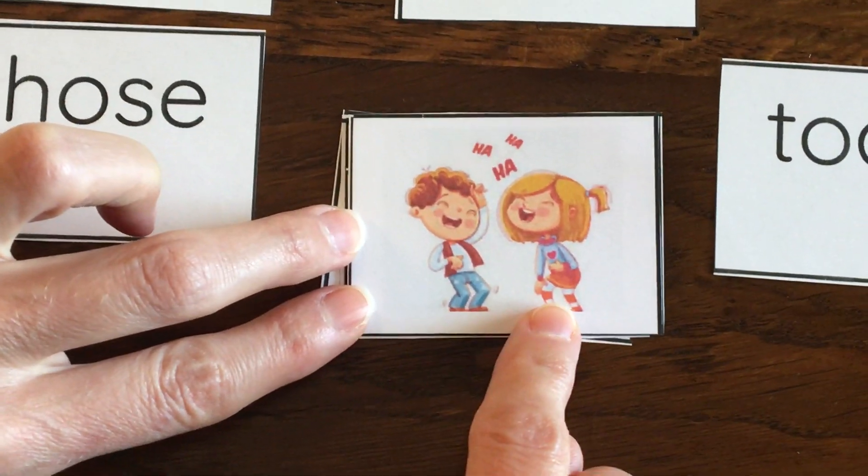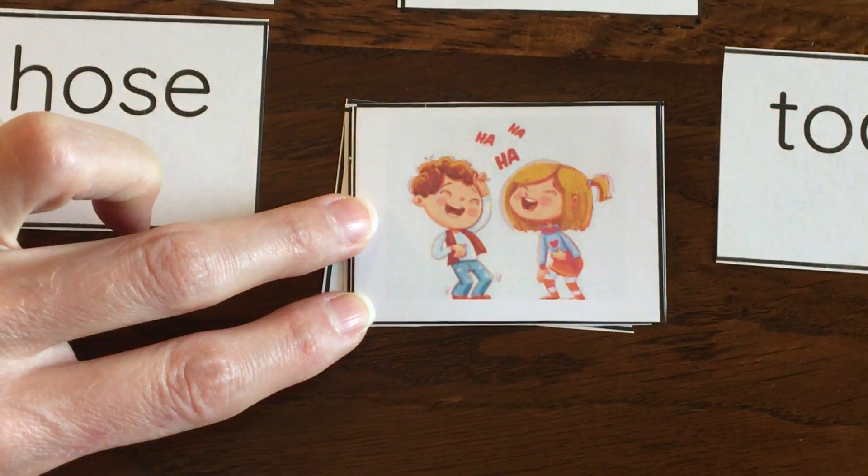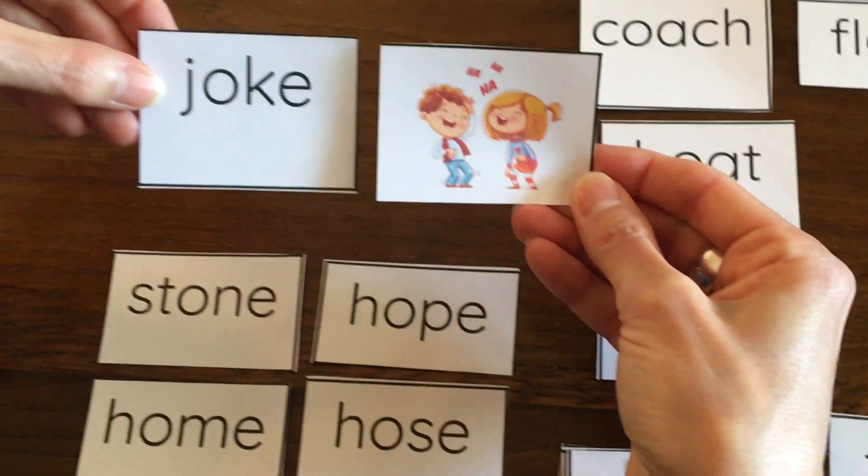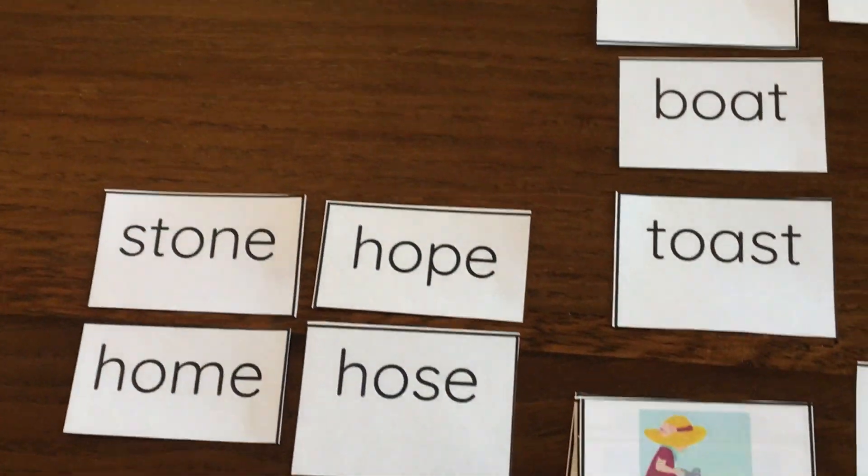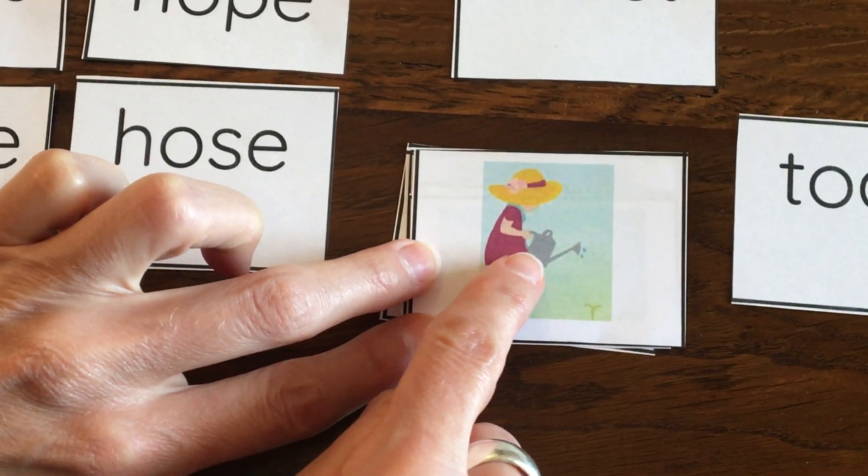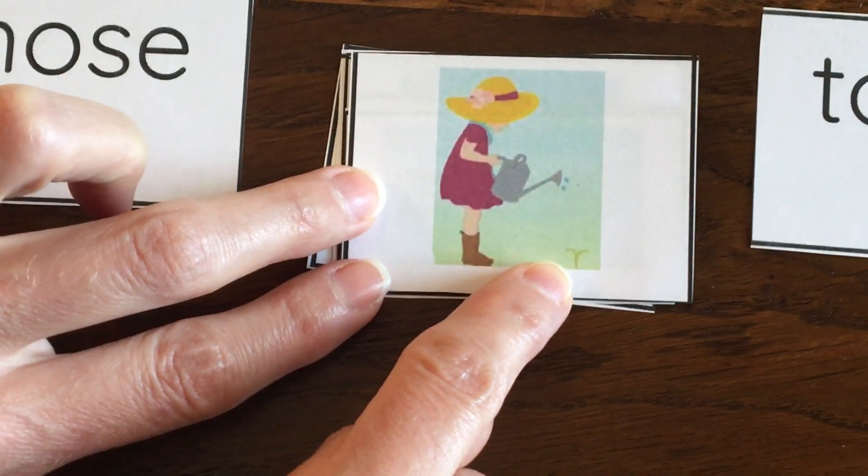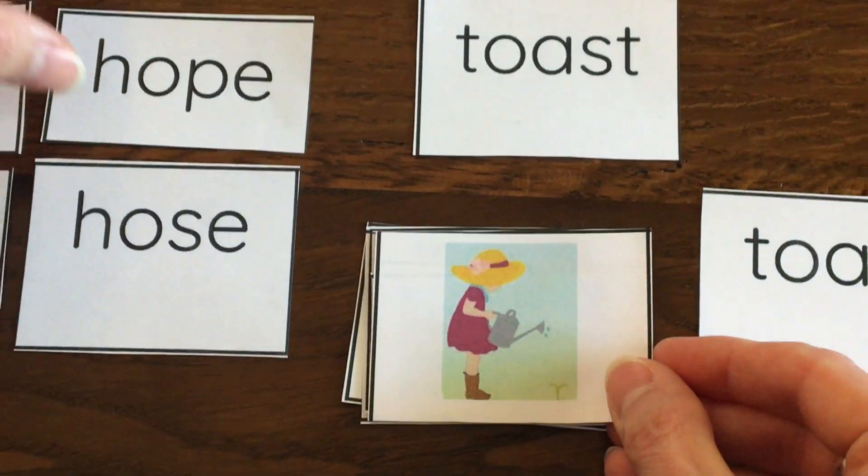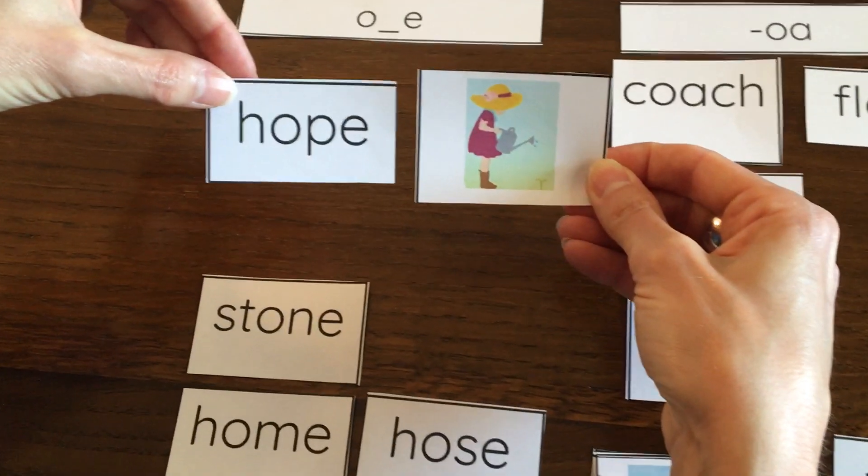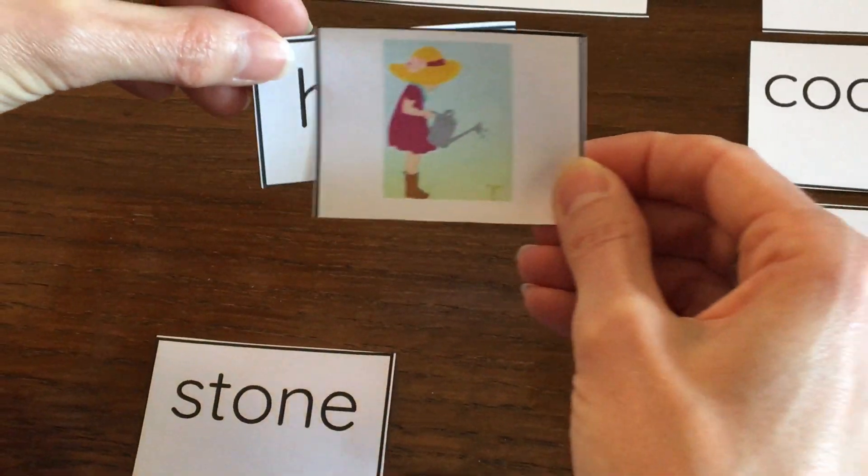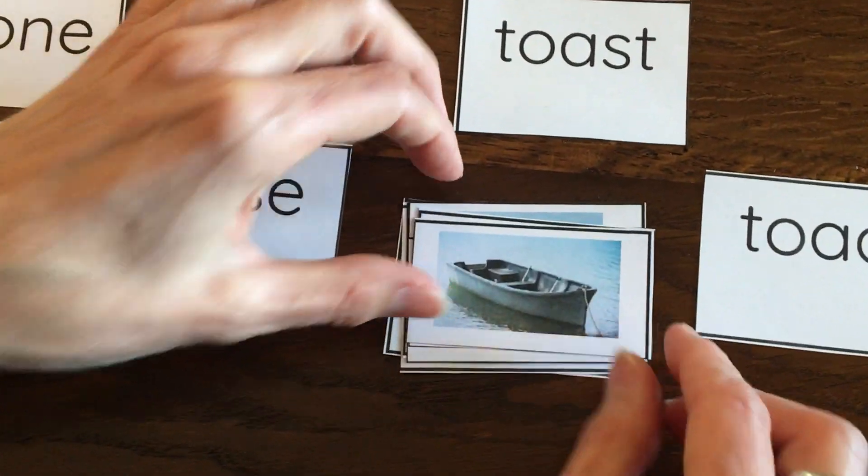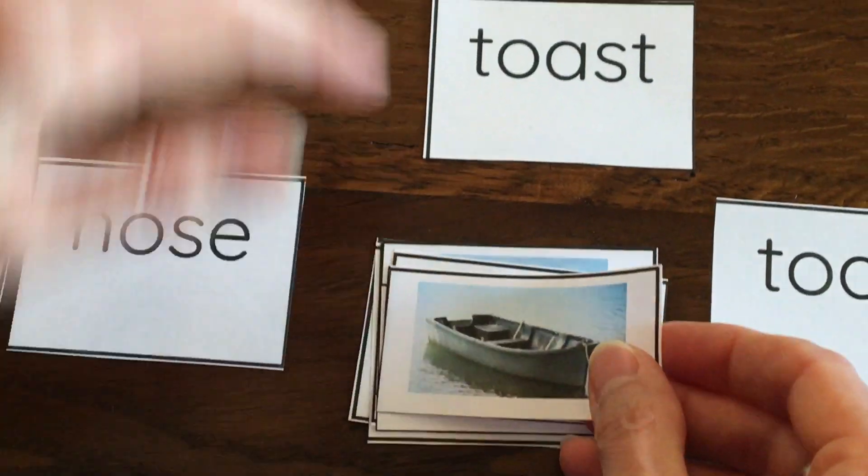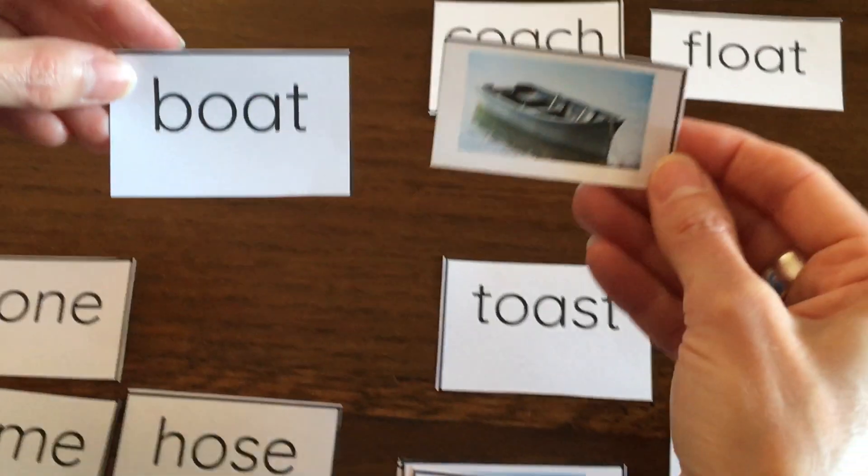Look at these kids. They're laughing because one of them told a joke. Let's find the word joke. I found it. And this little girl is watering a seedling. She hopes it will grow. So we're looking for the word hope. I hope my seed will grow. Here is a boat. This kind of boat is called a rowboat. Maybe you've been in one before. Boat.